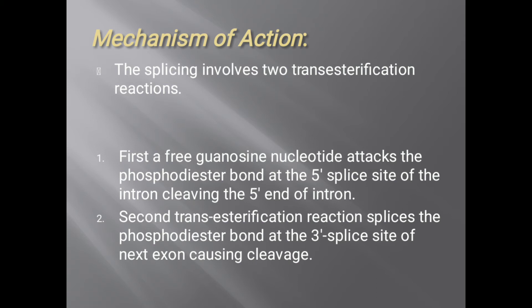Now the mechanism of action of Group 1 intron ribozymes. The splicing involves two transesterification reactions. A transesterification reaction occurs between an ester and an alcohol. First, a free guanosine nucleotide attacks the phosphodiester bond at the 5' splice site of the intron, cleaving the 5' end of the intron. Second, a transesterification reaction cleaves the phosphodiester bond at the 3' splice site of the next exon, causing cleavage.